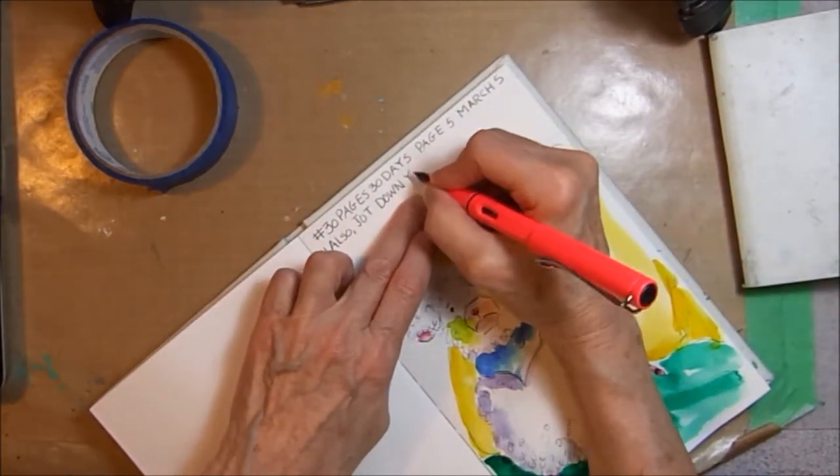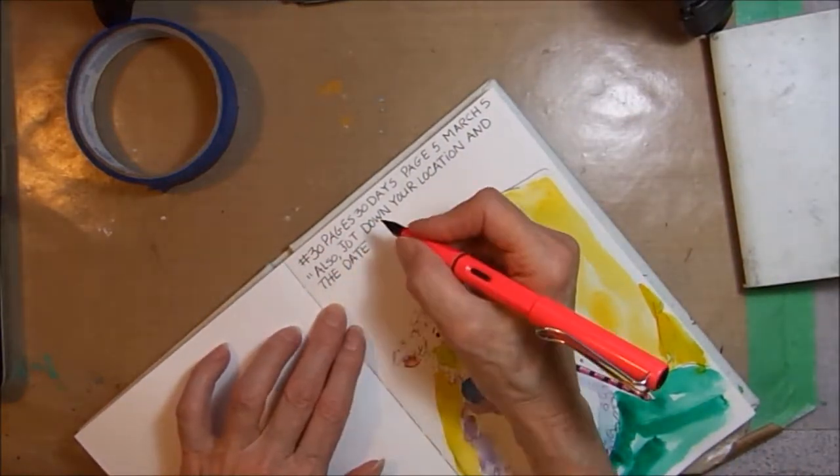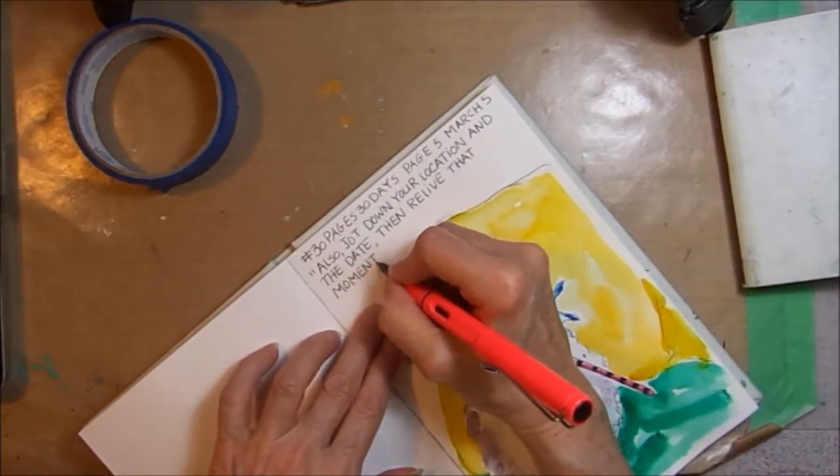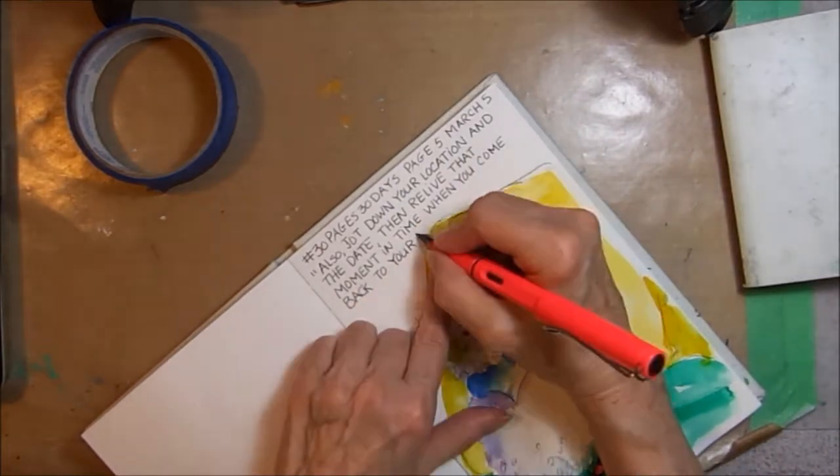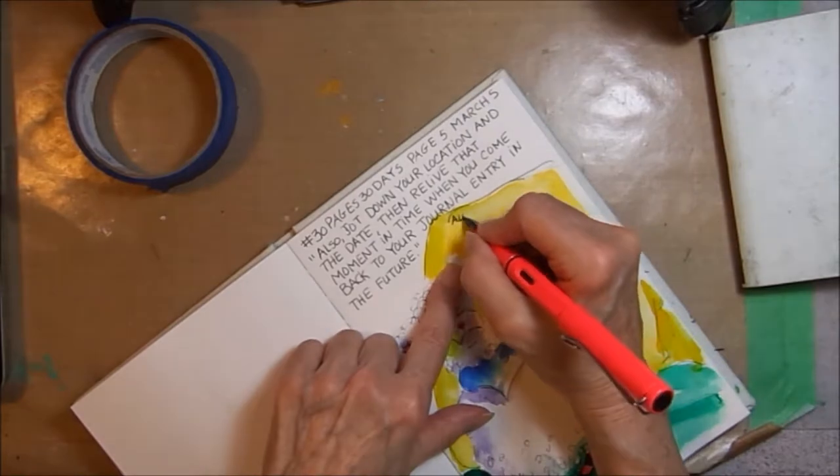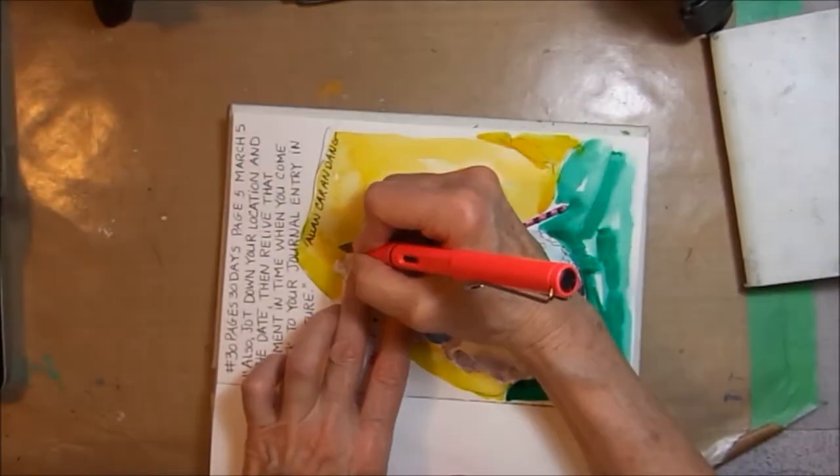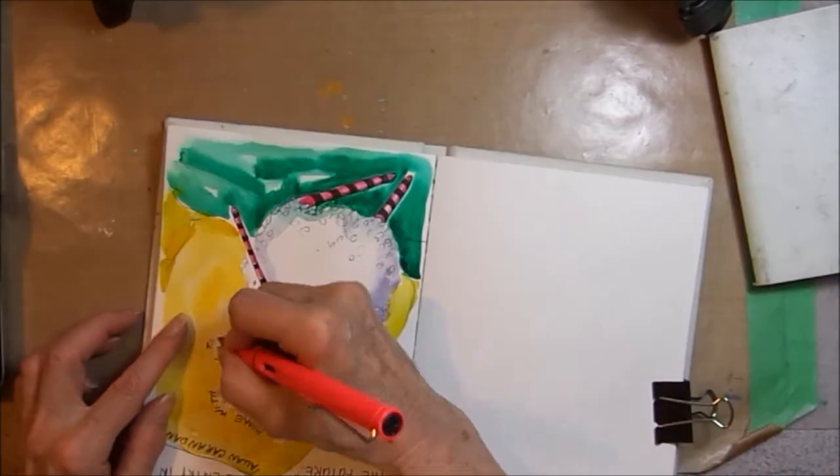The words are from Alan Carandang: 'Also, jot down your location and the date. Then we relive that moment in time when you come back to your journal entry in the future.' Those are the words from the prompt today. So I'm going to write down on my journal page that I'm home with a tummy ache today. So when I look back at this page, I can relive the moment.